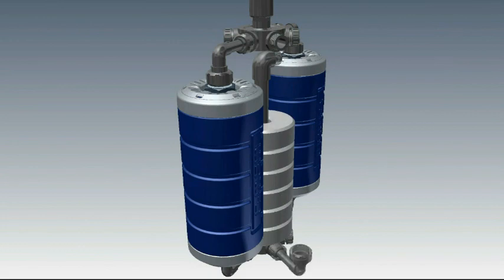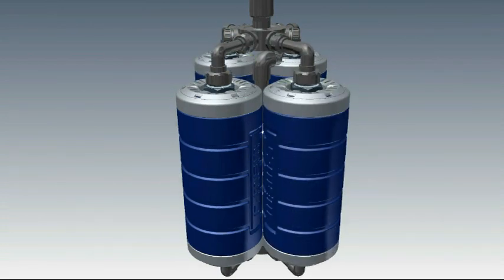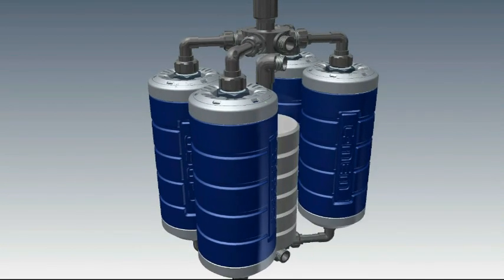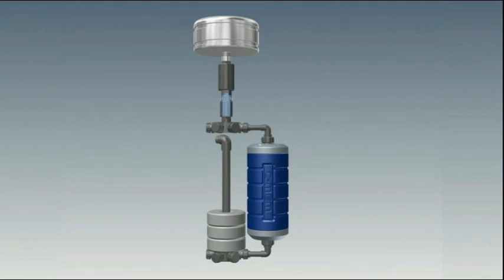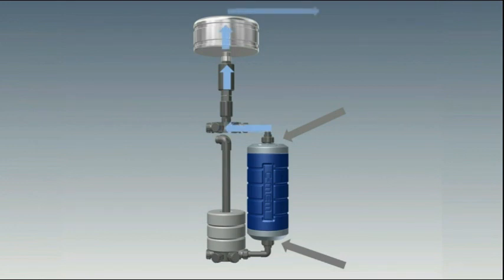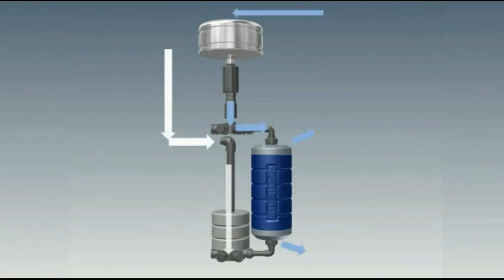The Aqua Loop membrane unit can be equipped with up to six membrane cartridges, depending on the required amount of water to be recycled. The built-in pump draws water through the membranes and supplies it via permeate hose to the clean water container. The membranes are automatically cleaned by back flushing via the built-in pump and with air supplied by the blower.